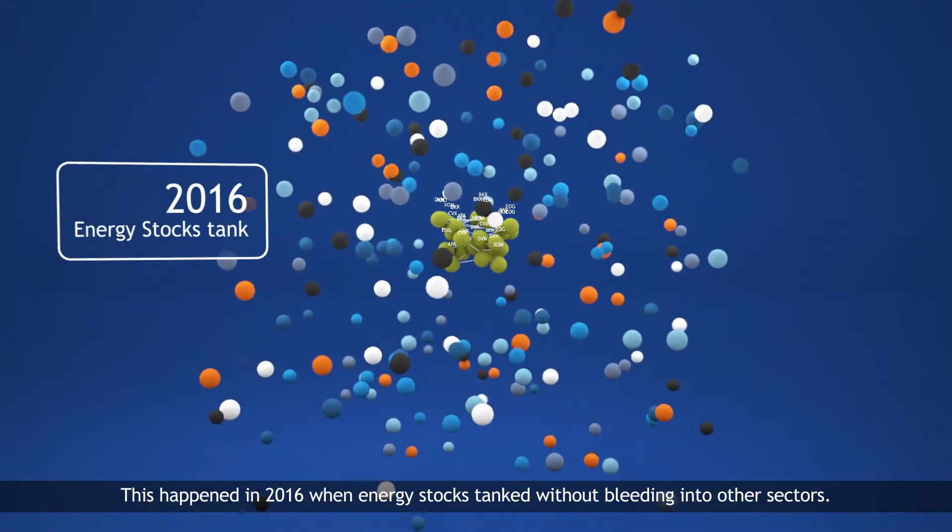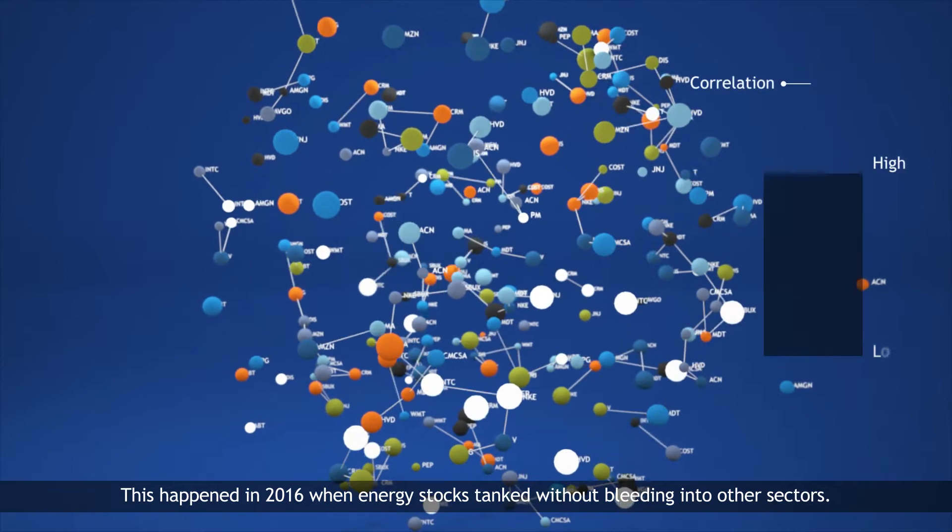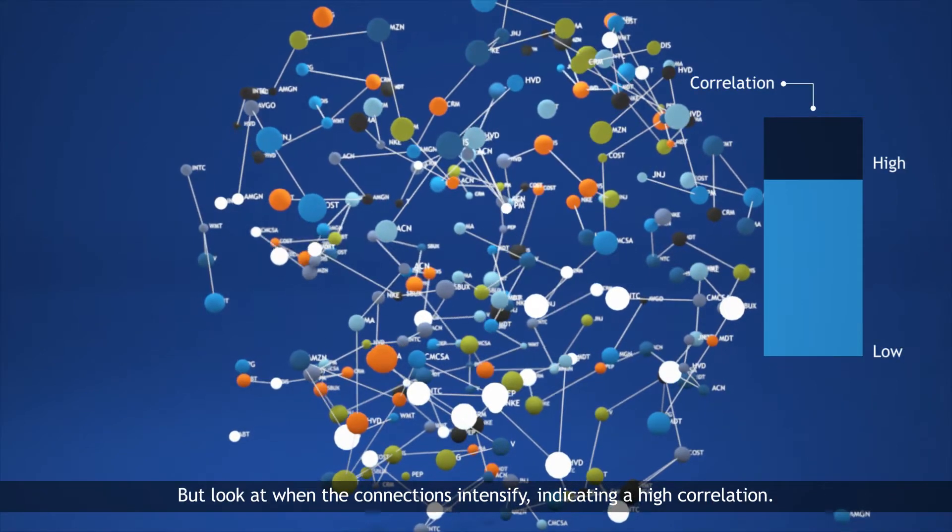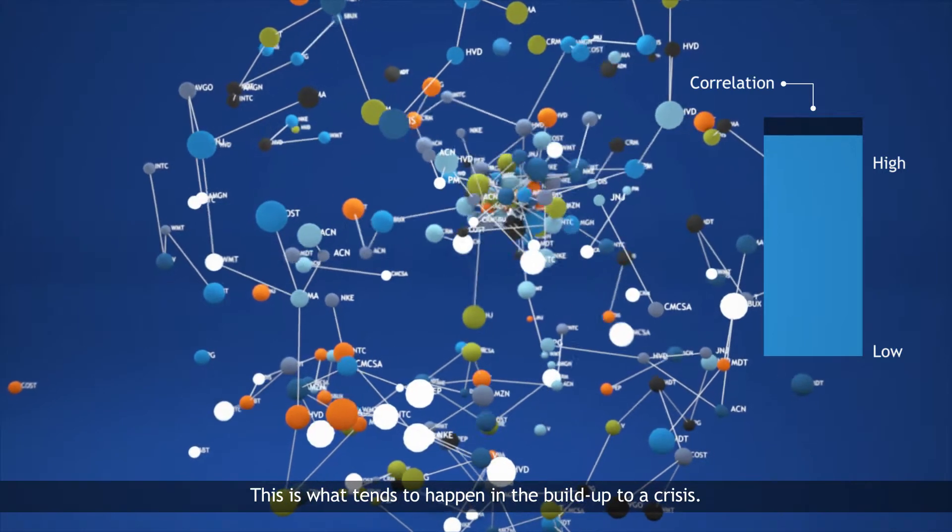This happened in 2016 when energy stocks tanked without bleeding into other sectors. But look at when the connections intensify, indicating a high correlation. This is what tends to happen in the build-up to a crisis.